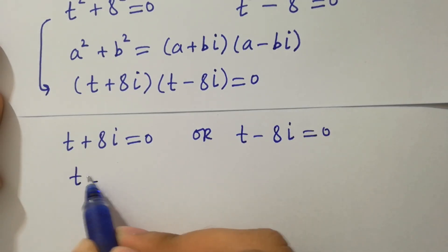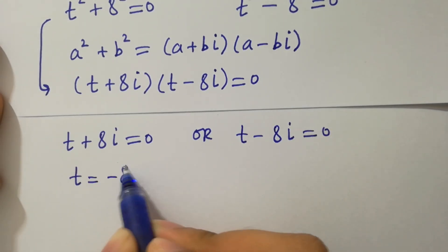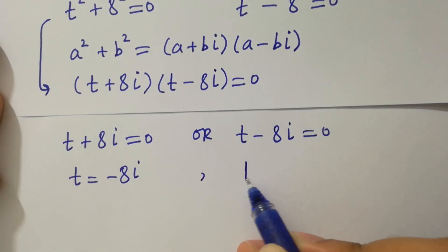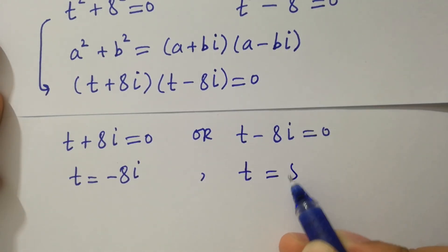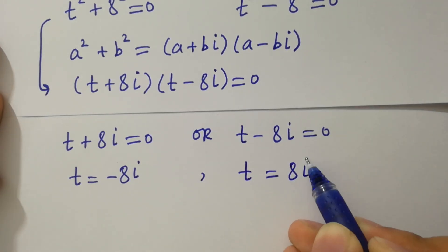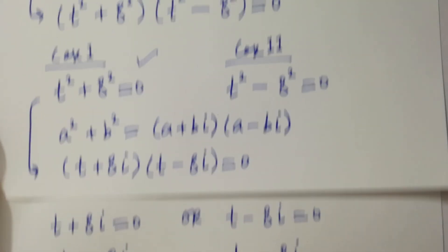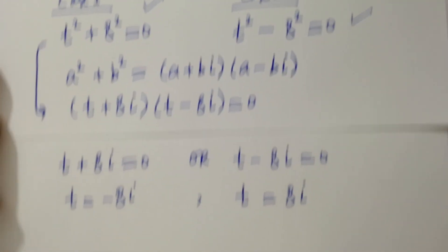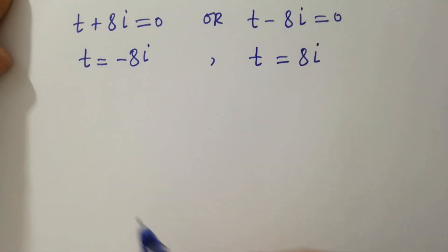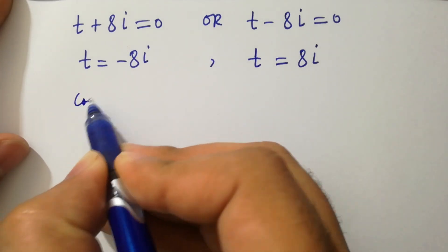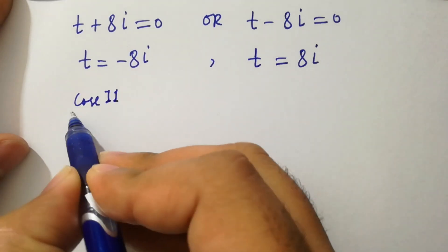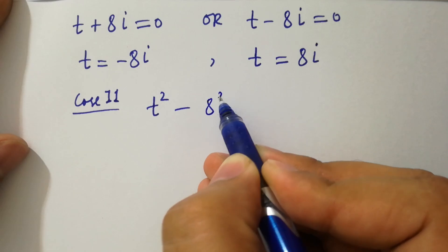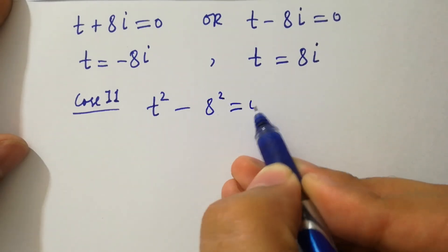Either t plus 8i equals 0 or t minus 8i equals 0, giving t equal to minus 8i and t equal to plus 8i. For the second case, we have t squared minus 8 squared equal to 0.